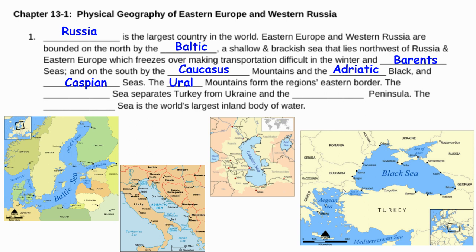The Ural Mountains form the border between Europe on the west and Asia on the east. The Black Sea separates Turkey from Ukraine and the Balkan Peninsula, which we've identified before when we talked about Western Europe, where the country Greece is located. This is also an area where you'll see the Caspian Sea, which is the world's largest inland body of water — unfortunately it is decreasing in size, and we'll talk about that shortly.